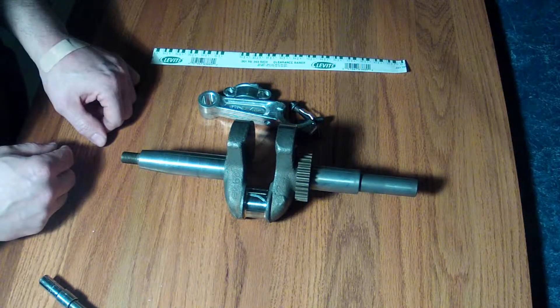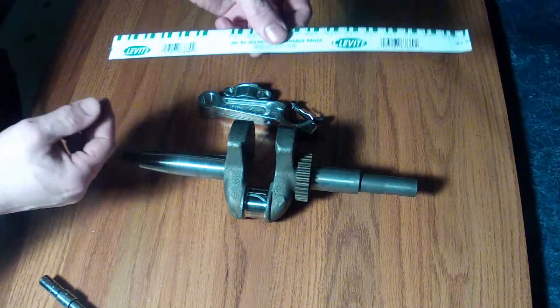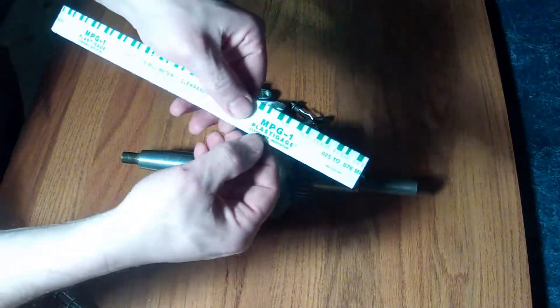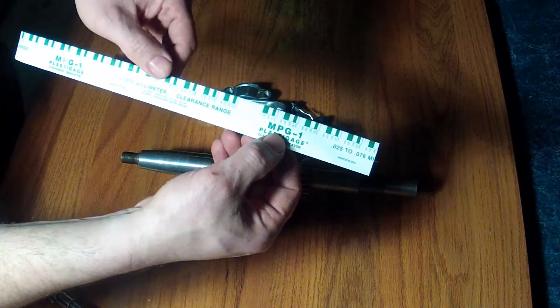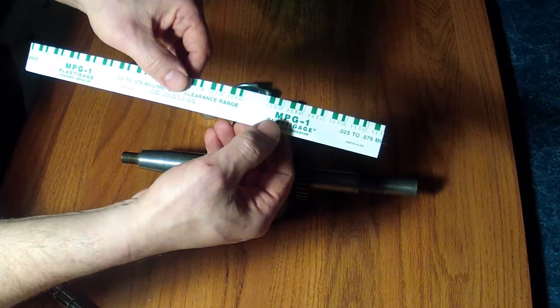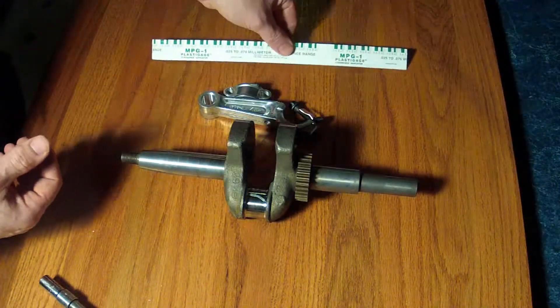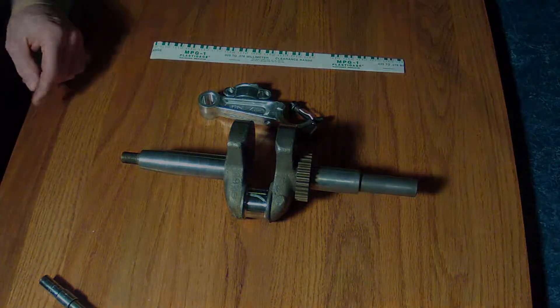So there you have it, PlastiGauge. It comes in three different sizes that I'm aware of. This is the smallest, MPG1, which is the green. So thanks for watching.